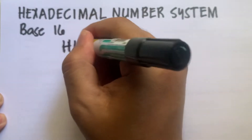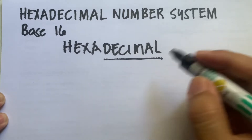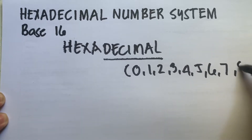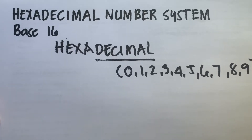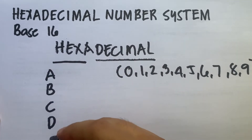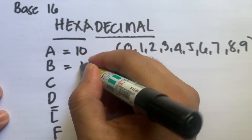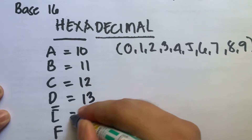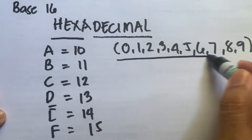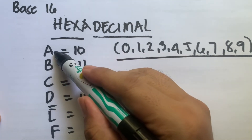Hexadecimal uses the digits of the decimal number system — zero, one, two, three, four, five, six, seven, eight, and nine — and six extra symbols. The six extra symbols are A, B, C, D, E, and F, which represent the numbers 10, 11, 12, 13, 14, and 15. So in the hexadecimal number system, after zero to nine, we have 10 through 15 represented by letters A through F.